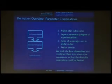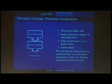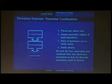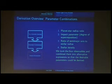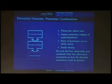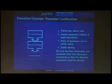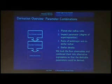We combine those four observables into different parameters. We get the planet-star radius ratio — because the bigger the planet is in relation to the star, the more the transit depth will change and the more light it will block. We get the impact parameter, which is the degree of superposition the planet has upon the star. We also get the ratio of the semi-major axis to the stellar radius, and an equation for the stellar density.